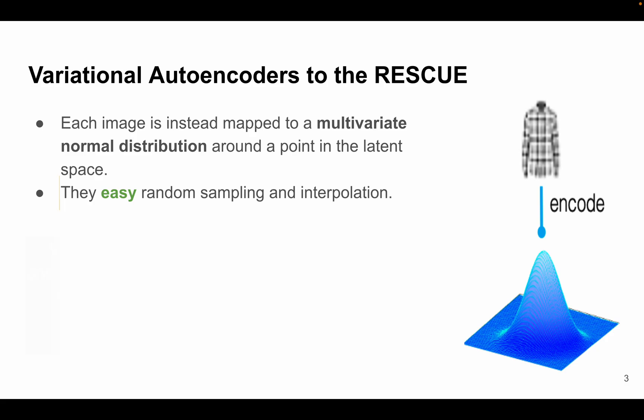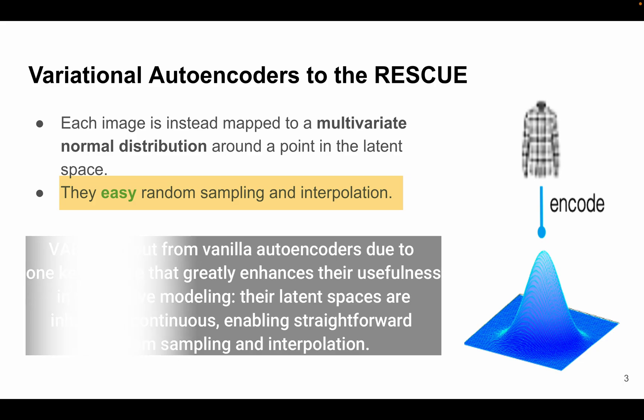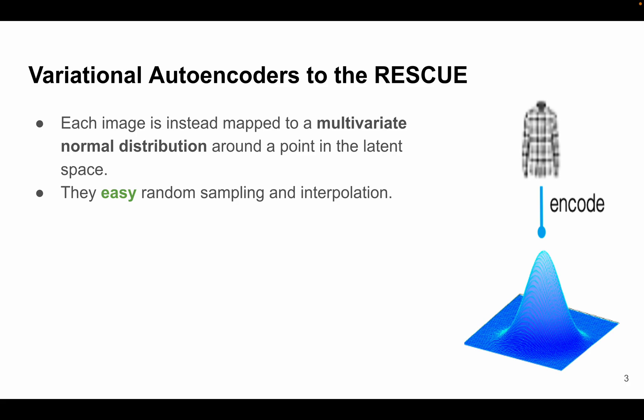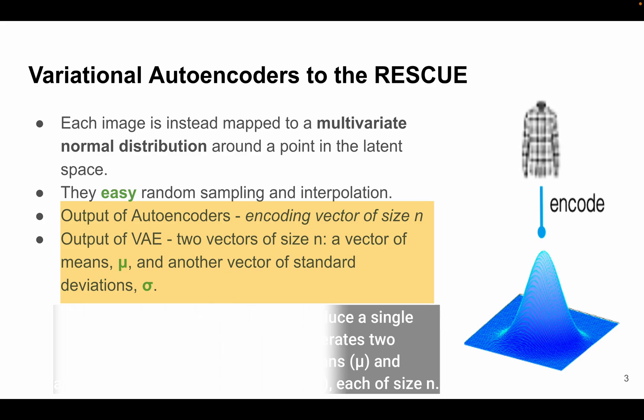Variational autoencoders stand out from vanilla autoencoders due to one key feature that greatly enhances their usefulness in generative modeling. This feature is that the variational autoencoder latent space is inherently continuous, enabling straightforward random sampling and interpolation. Now to accomplish this, variational autoencoders employ an unconventional approach: instead of having the encoder produce a single encoding vector of size n, it generates two separate vectors, one for mean and other for standard deviation, that is mu and sigma.